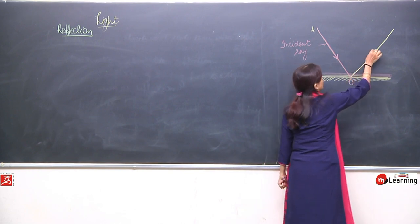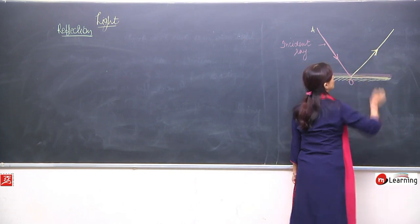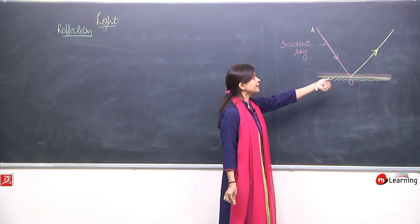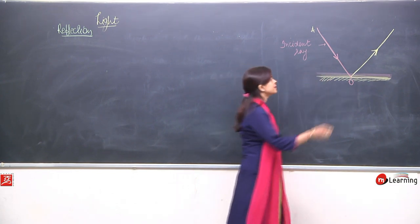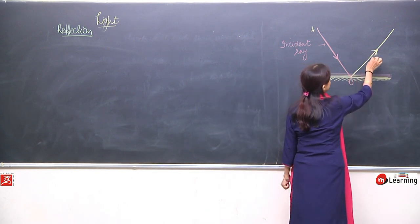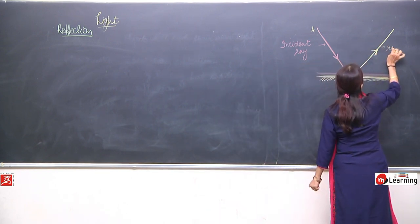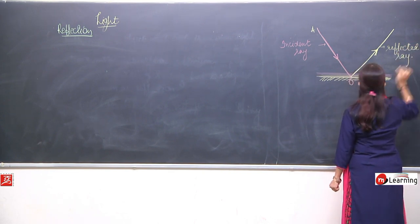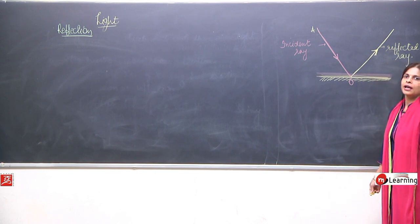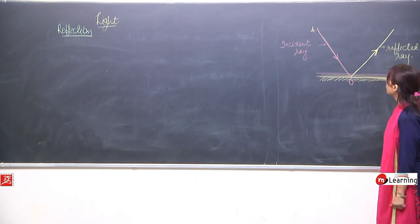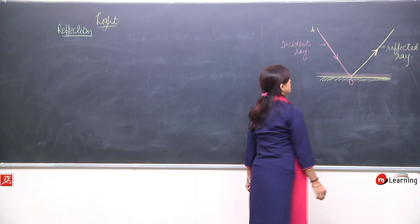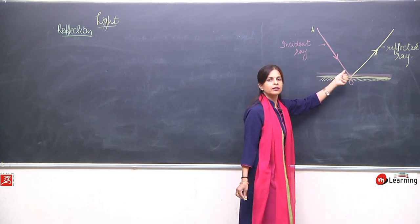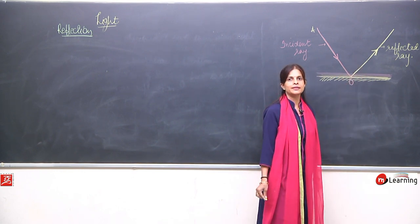When the ray of light which has fallen on the reflecting surface gets reflected — it is sent back — then this is known as the reflected ray. Point O is where the light has again got reflected.